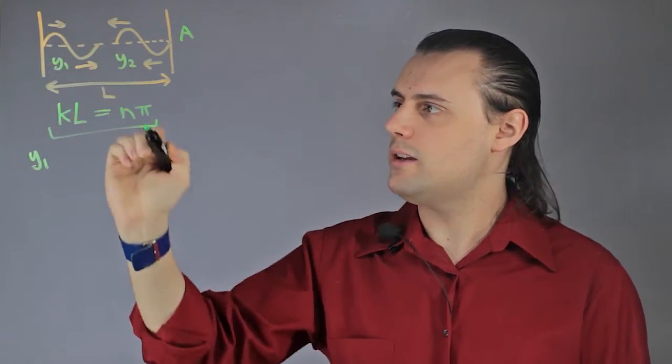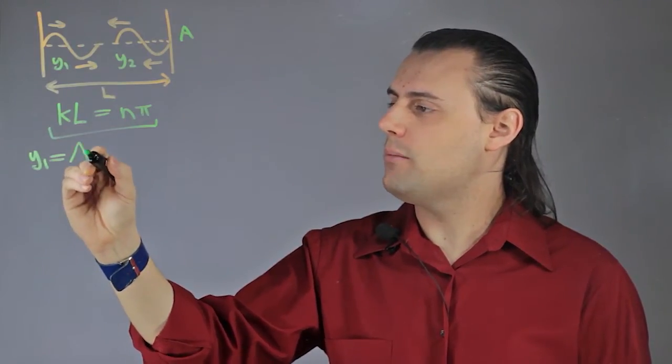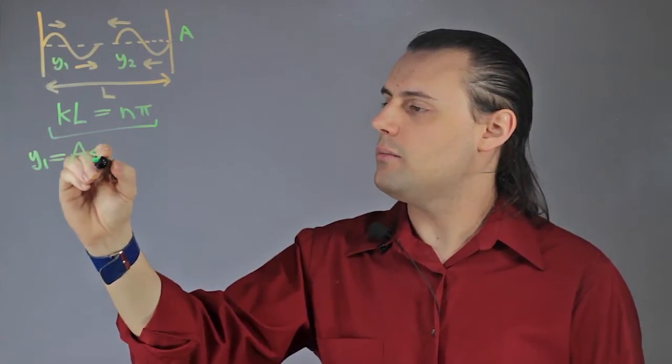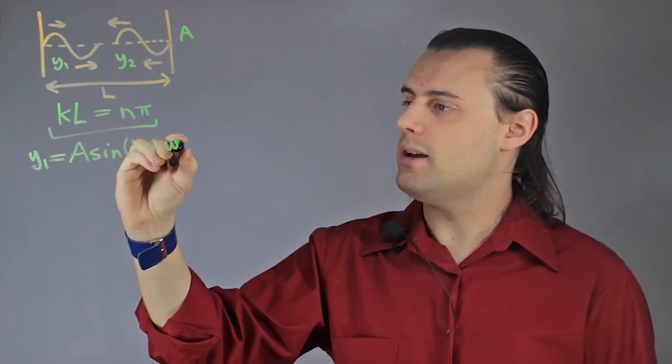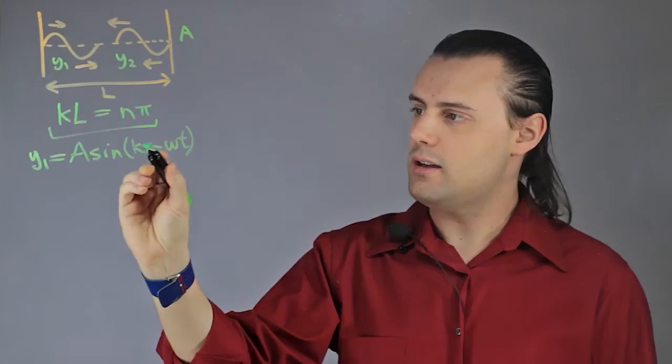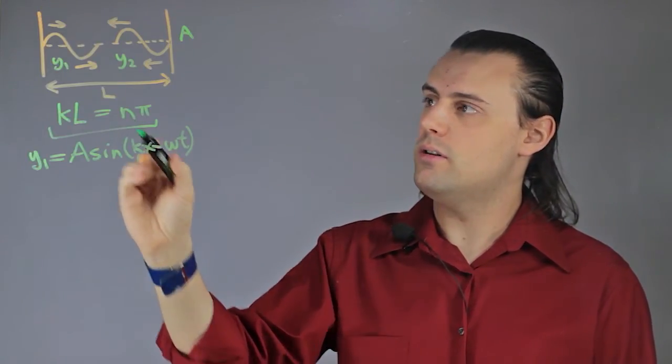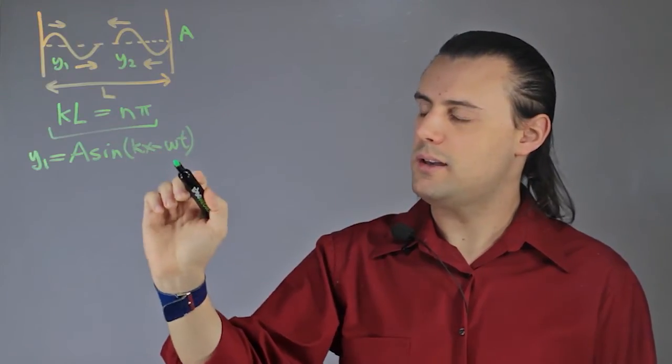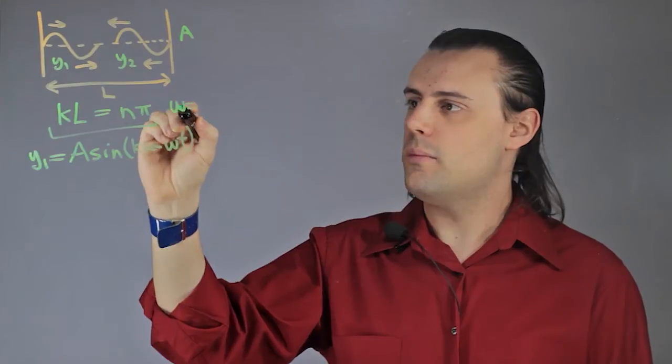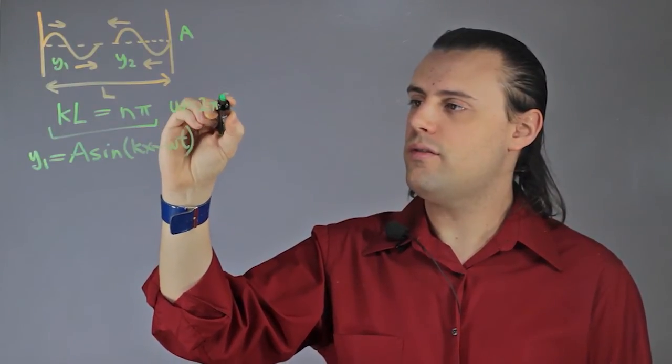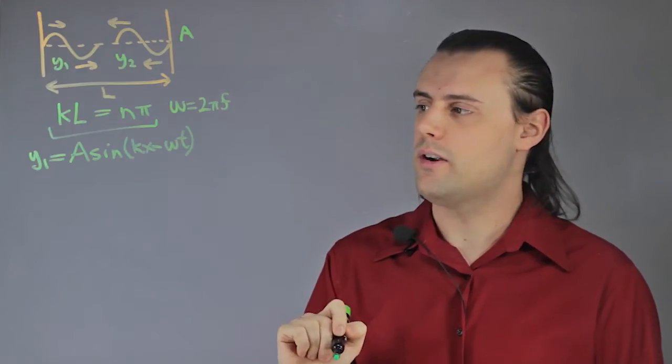Since they're oscillating in space and time, y₁ will be given by the amplitude A times sin(kx - ωt), where k is the wave number, x is the variable for space, its position in space, omega is the angular frequency, omega is equal to 2πf, where f is the frequency, and t is the time variable.